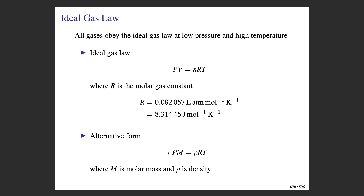In this video we're going to be talking about the ideal gas law, which is different than the empirical gas laws. When you're doing an empirical gas law problem, typically the gas is changing from one state to another — you have a set of initial pressure and volume, and a final pressure and volume. The ideal gas law is different because nothing's changing; you're just talking about a single state of the gas.